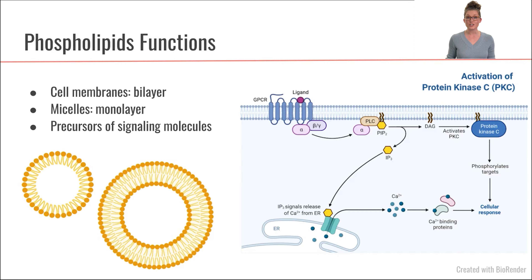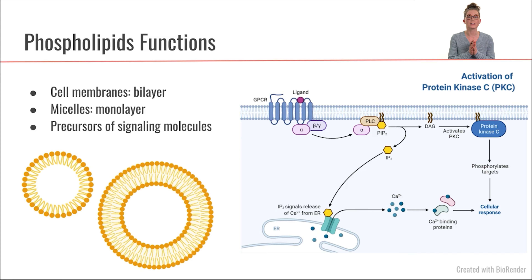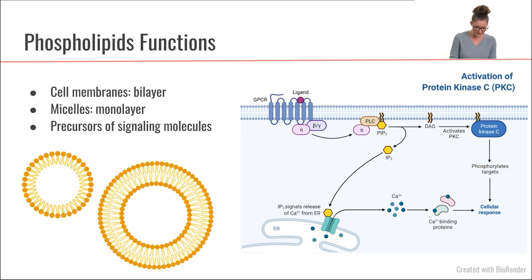Now let's talk about functions of phospholipids. We're already familiar with the idea that phospholipids are amphipathic molecules — they have a hydrophobic end and a hydrophilic end. That means we can make arrangements with them to separate different parts of the body. Phospholipids are really good at forming membranes to create barriers. One example, of course, is the phospholipid bilayer, which is what we make all of our cell membranes out of.